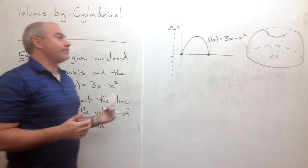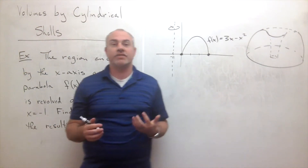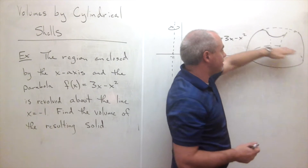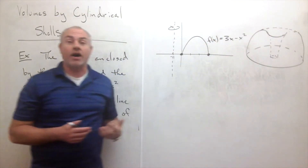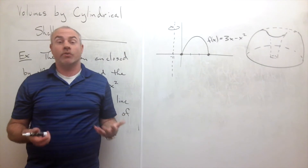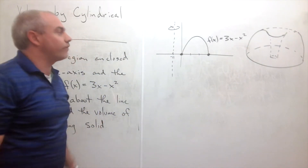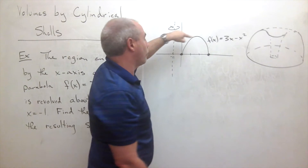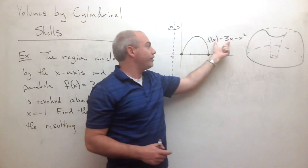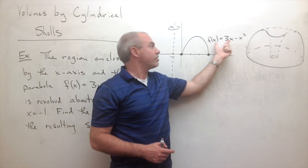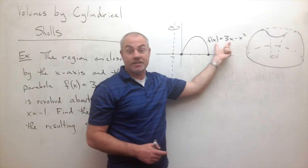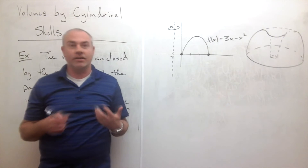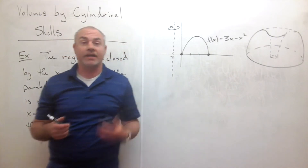You might say, 'Hey, this is the same as what we were doing with disks and washers.' You can see that a cross-section gives a washer. But the problem is, for the washer method, if I'm cutting slices along the y-axis, I need to solve this equation for x. Solving f(x) = 3x − x² for x is not easy, so that approach isn't great. We need a better way.